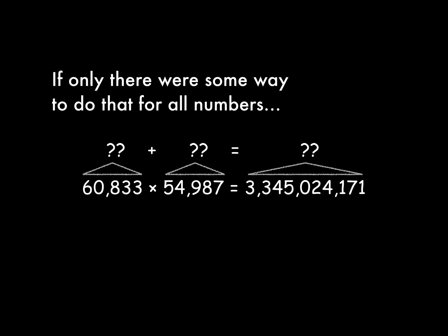What if there were a way to do that for all numbers? What if each number you wanted to multiply had a special number that went with it, sort of like the number of zeros, so that you could multiply two numbers together just by adding the special numbers that go with them?